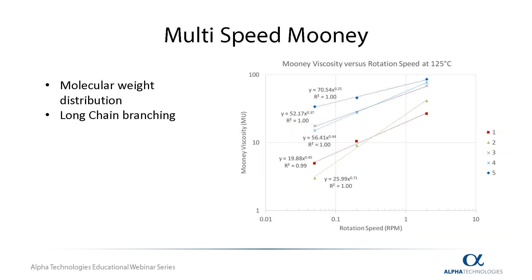In addition to process information, the multi-speed Mooney can also provide detailed information about molecular weight distribution and long chain branching. Pictured here, the slopes of the curves from a multi-speed Mooney give more information about molecular weight distribution and long chain branching. For example, materials with steeper slopes will typically be less branched with shorter branches. This is because as the shear rate increases, the polymer matrix will become less entangled and more uniform, being able to more easily slip over and under one another, resulting in a more flexible material.